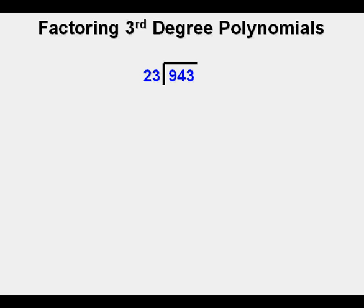To remind us of how long division works, we'll have a brief review by taking a three-digit number, 943, and dividing it by a two-digit number, 23.